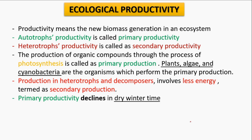Ecological productivity refers to the generation of new biomass in an ecosystem. Autotrophs' productivity is known as primary productivity, whereas heterotrophs' productivity is known as secondary productivity. Autotrophs perform photosynthesis and the photosynthetic product is the primary productivity. The production of heterotrophs and decomposers is far less energetic than primary productivity. Primary productivity may decline during dry winter periods.